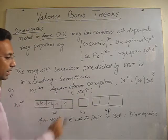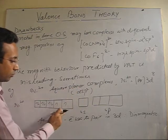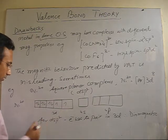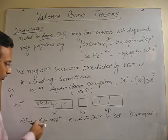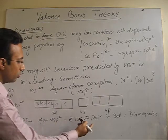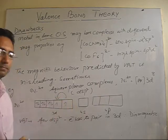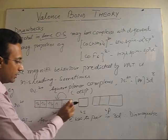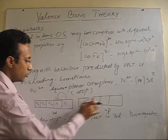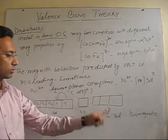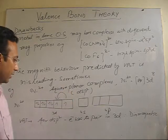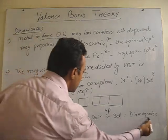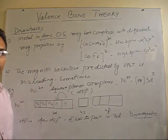then we have to vacate this d orbital. Then, it is very simple. According to VBT, we say that for dsp2, electron has to pair up. This electron has to pair up. Now, when this electron pairs up, this will be vacant and you can easily undergo dsp2 hybridization to accommodate 4 ligand, which leads to a square planar geometry. But, once the electron gets paired, the number of unpaired electron will be 0 and the complex will be diamagnetic.